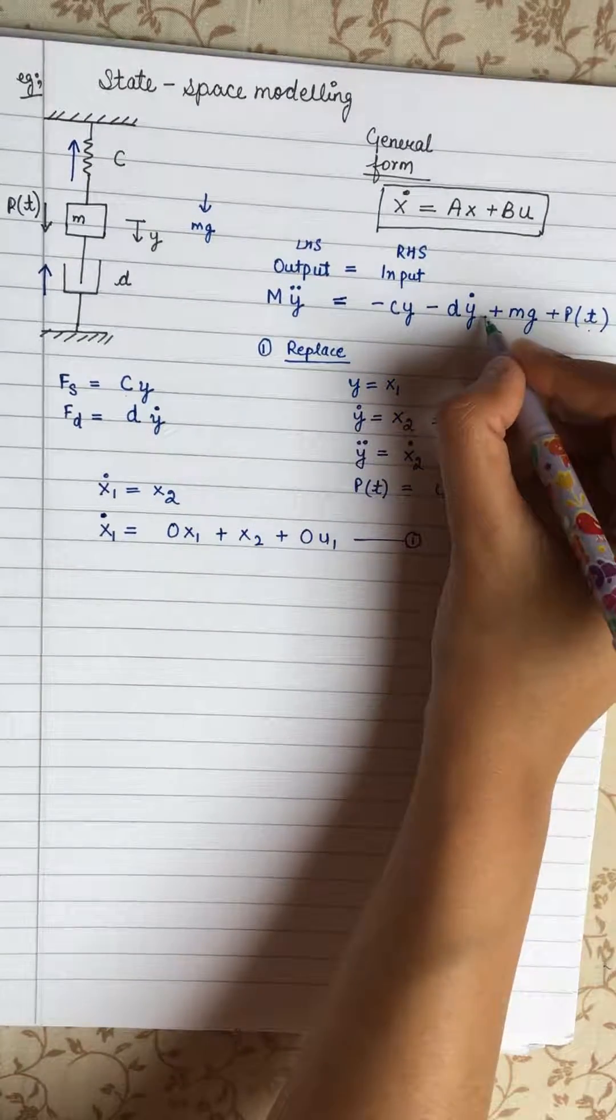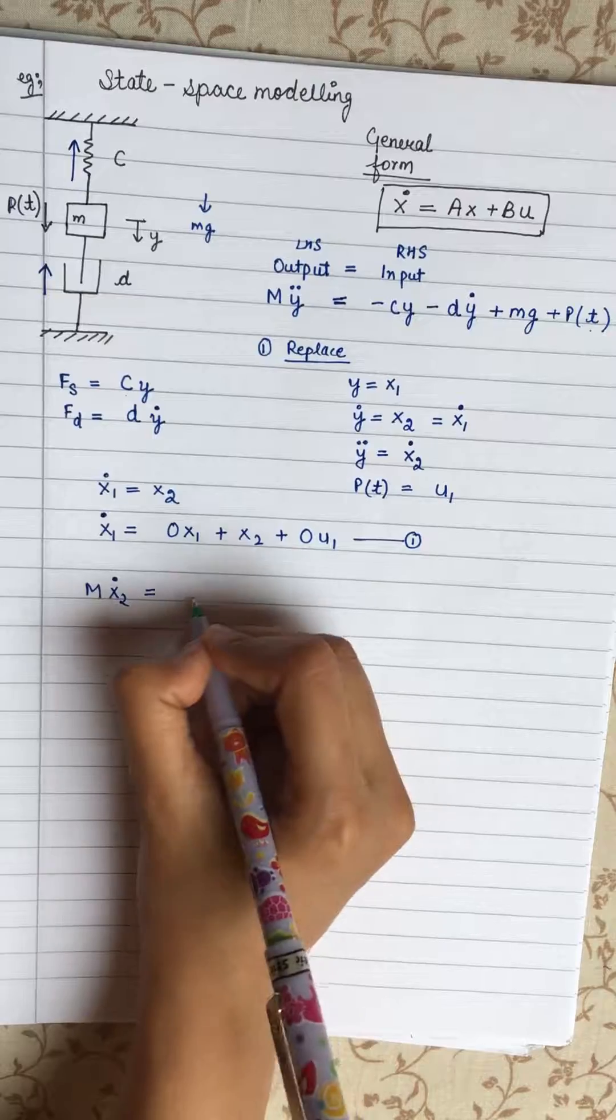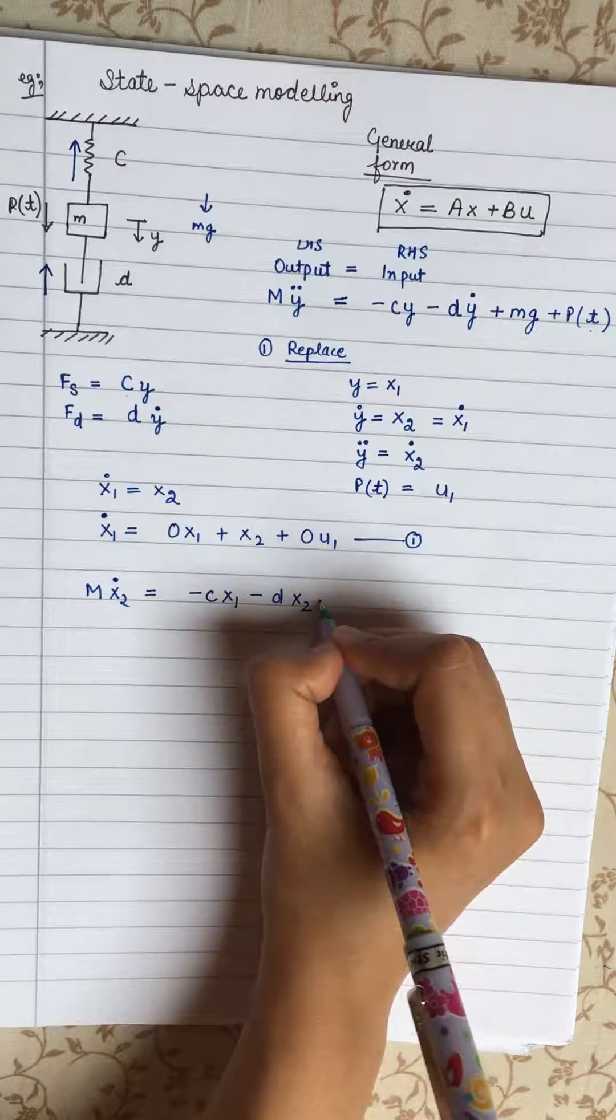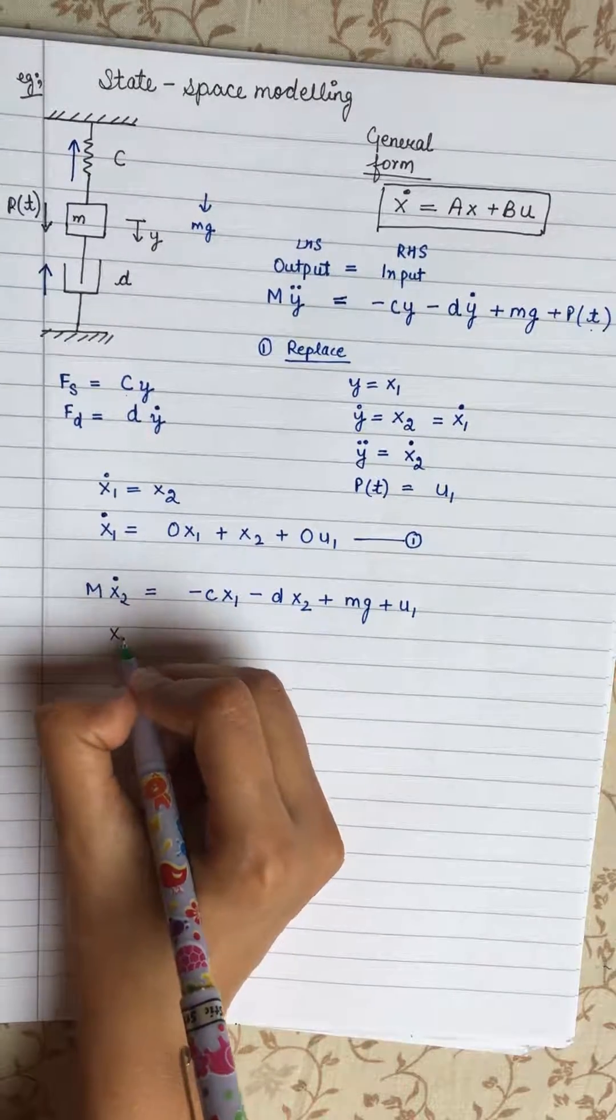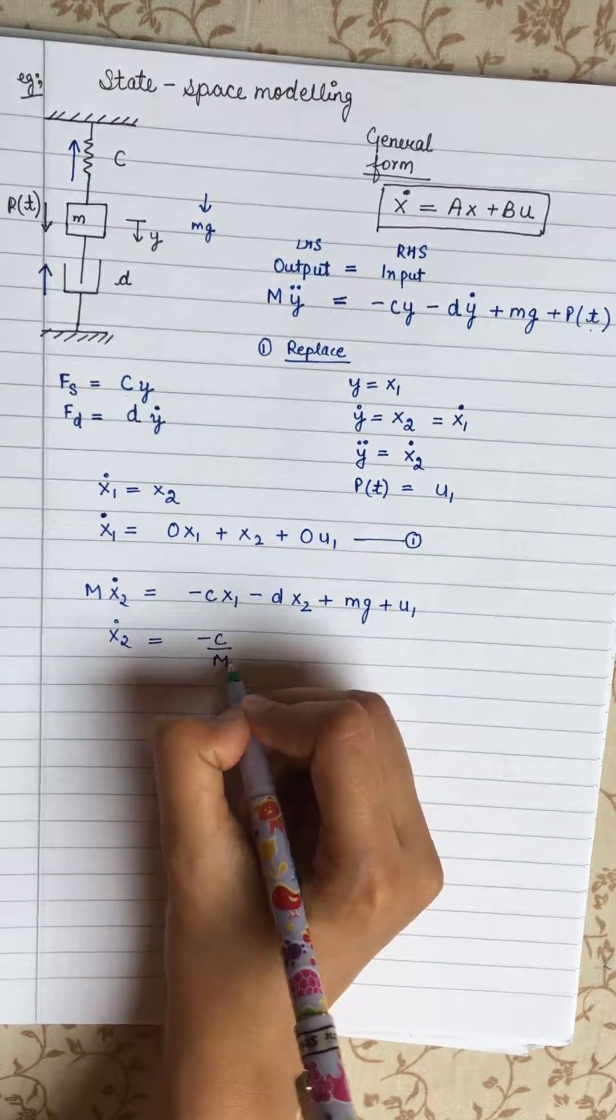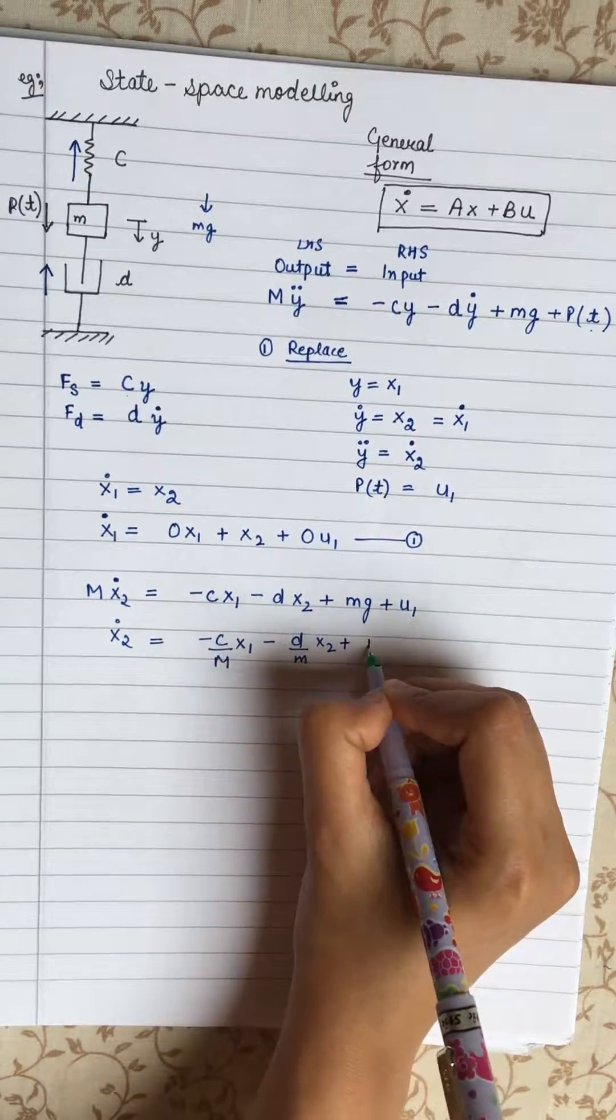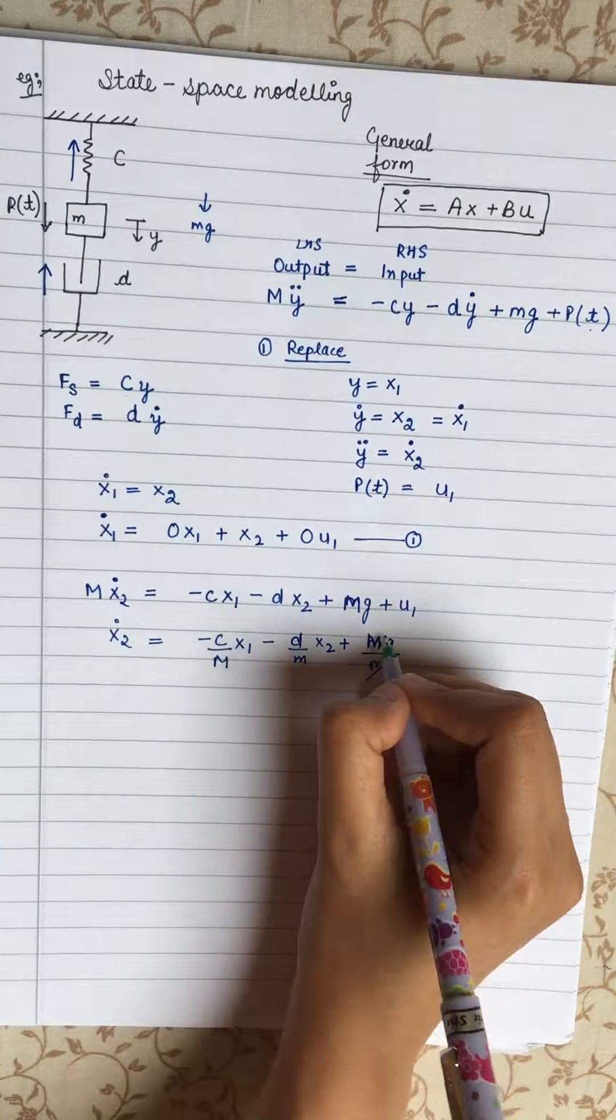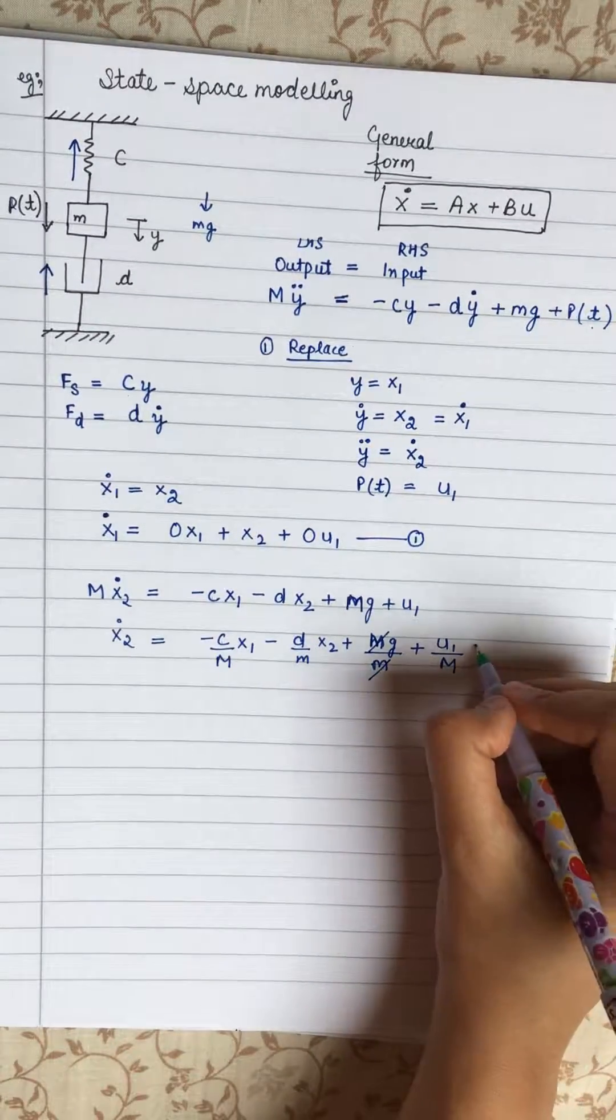Now we have to put these values back to the equation. So our equation becomes M X2 dot equals minus C X1 minus D X2 plus M G plus U1. Now we only want this X2 dot. So bring this M down here. So it will be minus C by M X1 minus D by M X2 plus M G by M. So this will get cancelled plus U1 by M. Now this is our second equation.